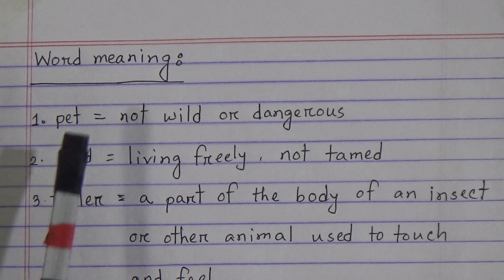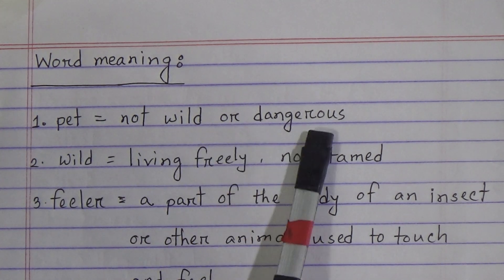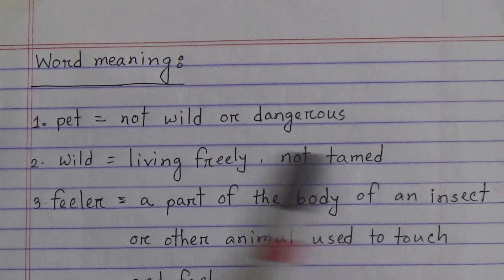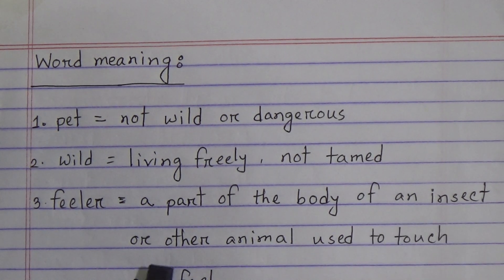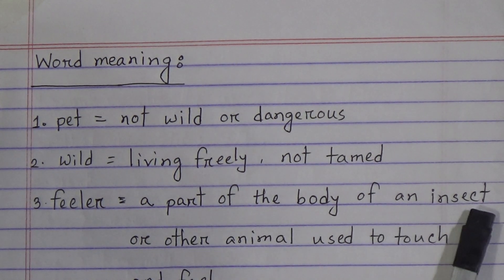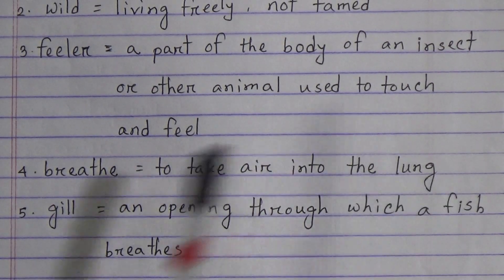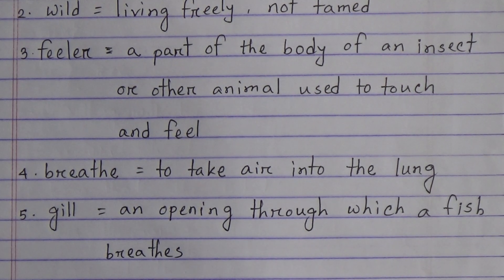First of all, we learn today's word meanings. Number one: pet — pet means not wild or dangerous. Number two: wild — wild means living freely, not tamed. Number three: feeler — feeler means a part of the body of an insect or other animal used to touch and feel. Number four: breath — breath means to take air into the lung. Number five: gill — gill means an opening through which a fish breathes.